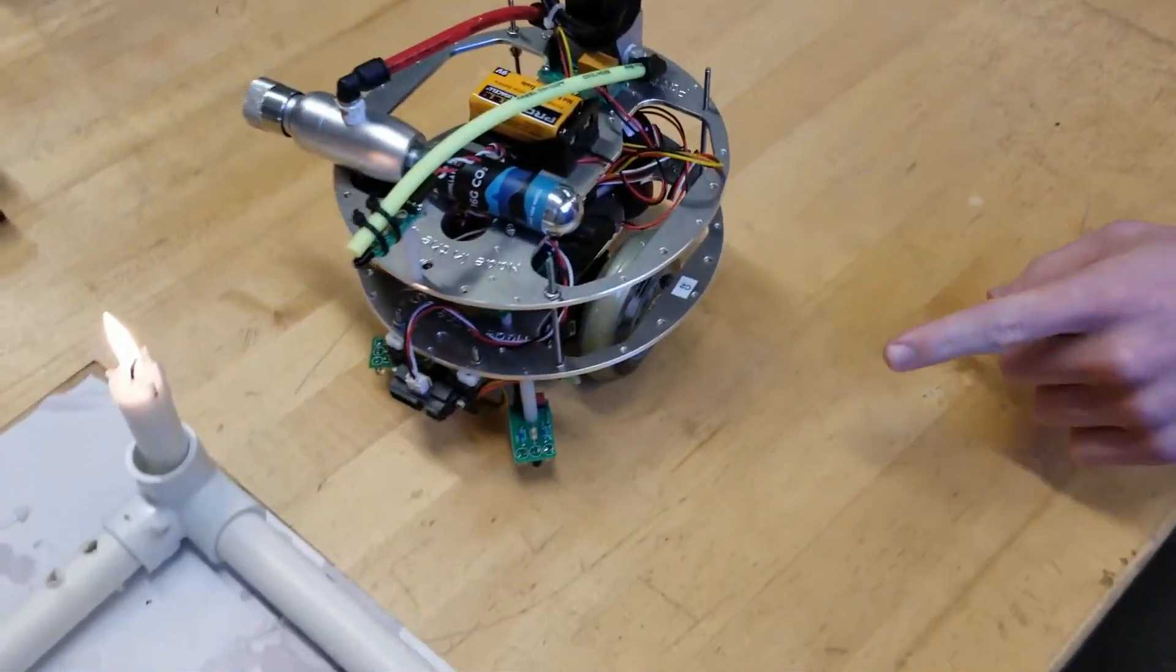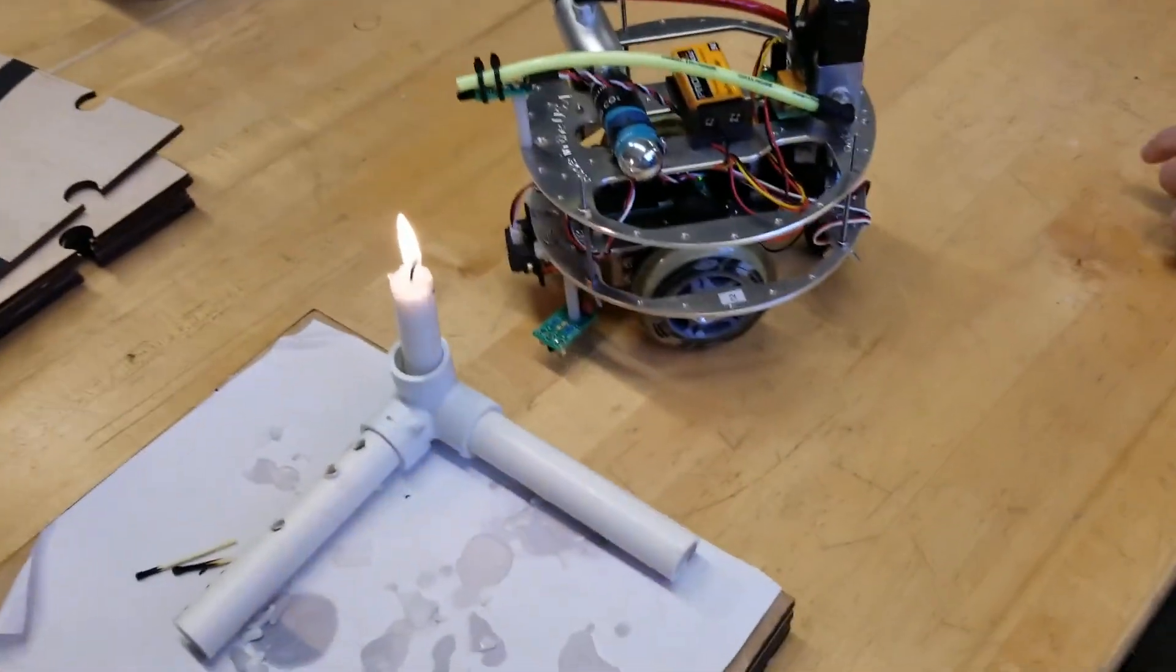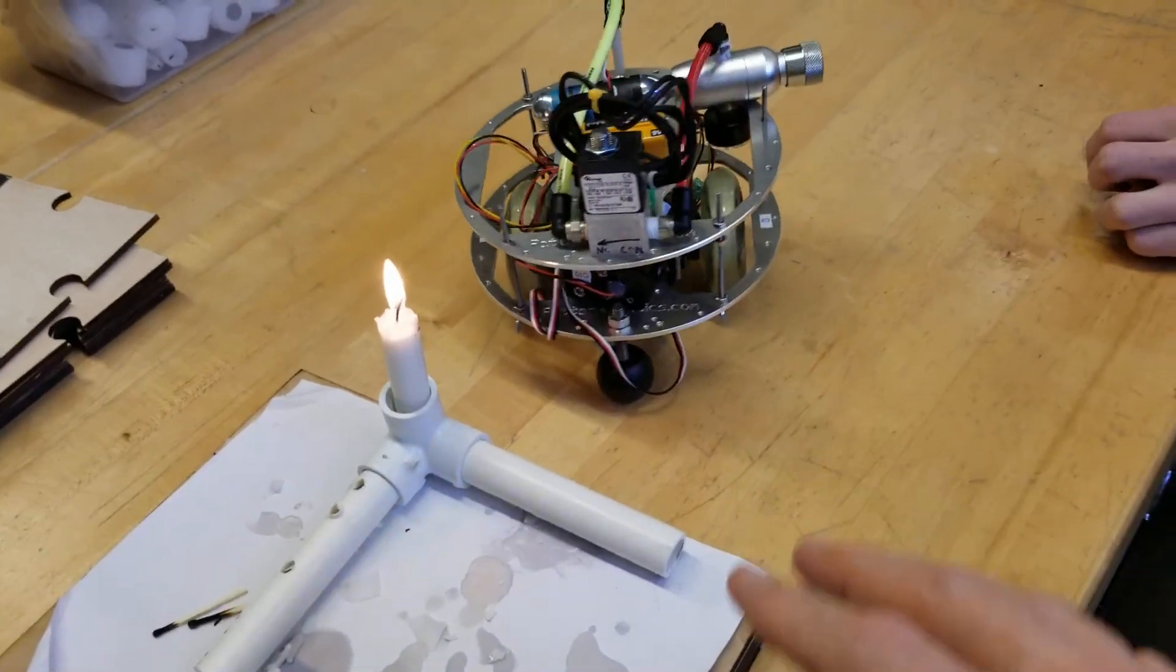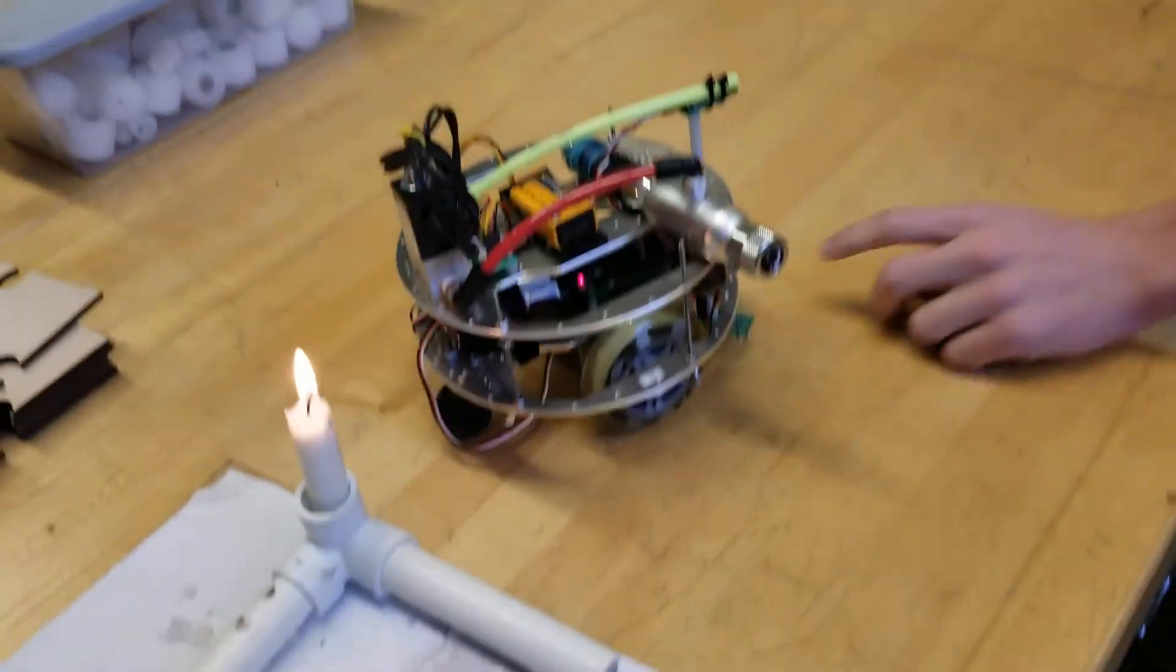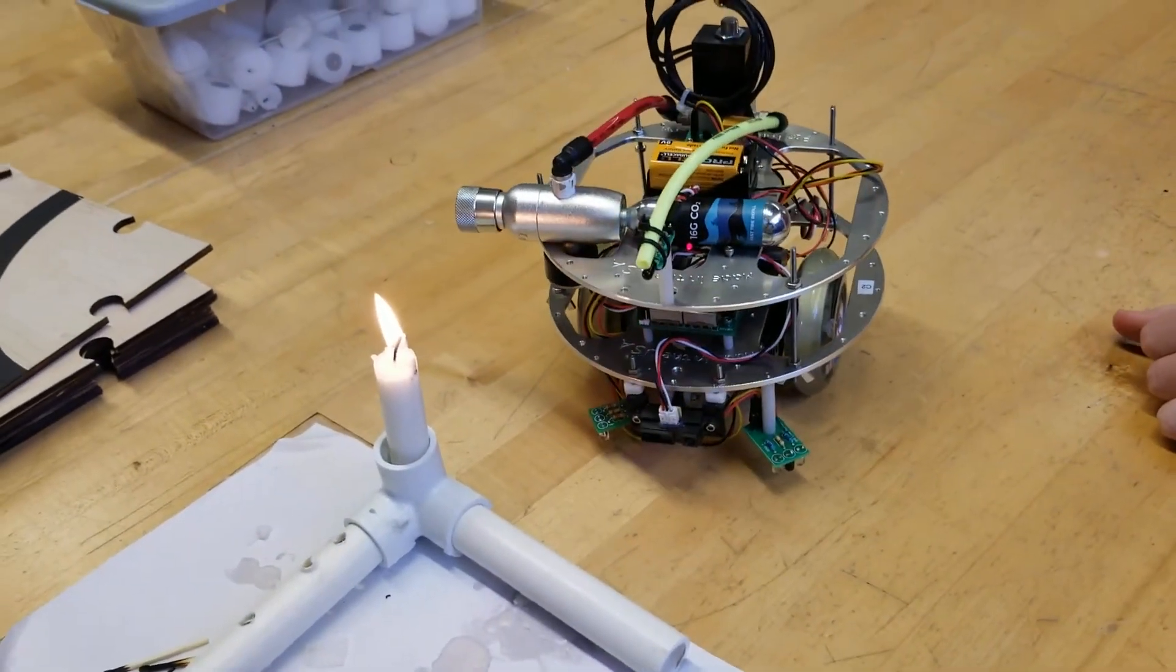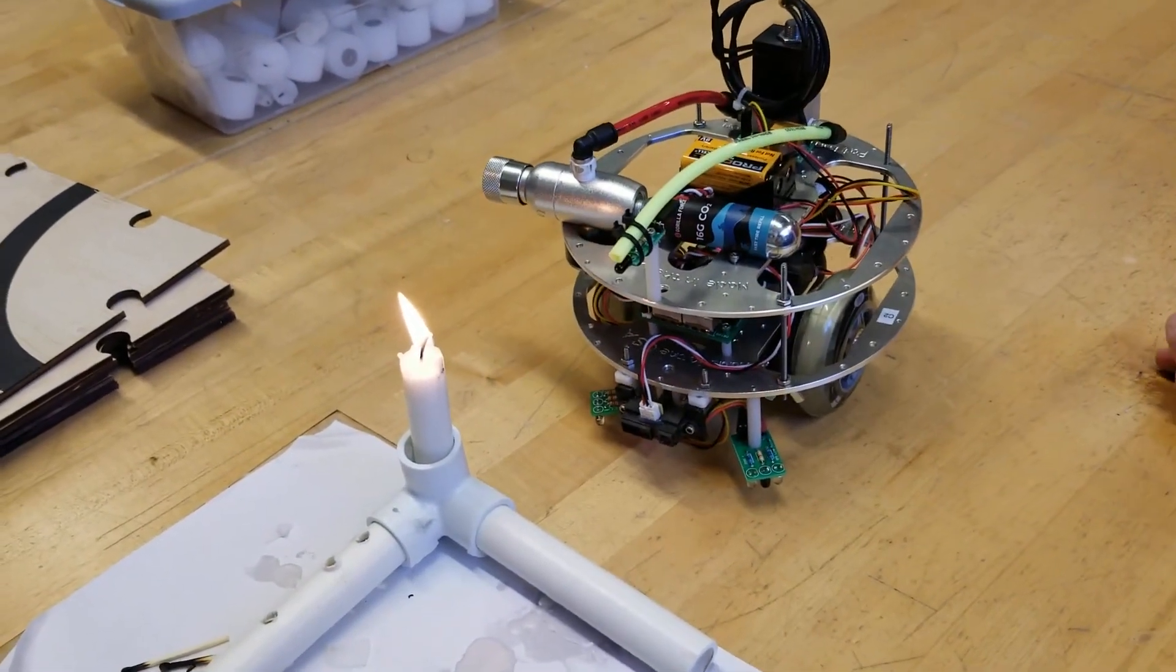And then it will approach, do the same thing one more time, and then extinguish the candle. Why did it stop where it stopped? That would be the distance sensor right here. It detects the base of the candle and realizes that it's close.